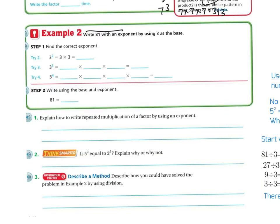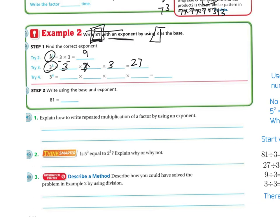Example 2: write 81 using an exponent with 3 as the base. Let's try until we get there. 3 to the 2nd power is 3 times 3, which is 9 — not 81. 3 to the 3rd power is 3 times 3 times 3: that's 27 — still not 81. So let's try 3 to the 4th power: 3 times 3 is 9, times 3 is 27, times 3 is 81. So 81 equals 3 to the 4th power.